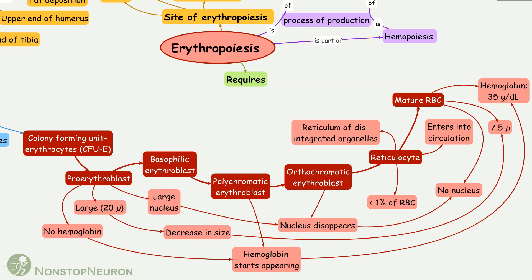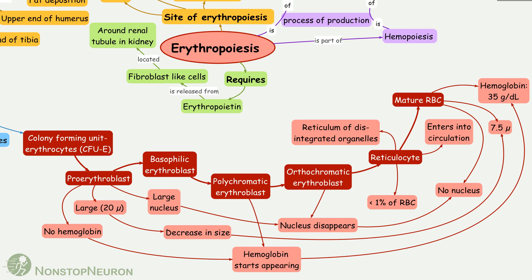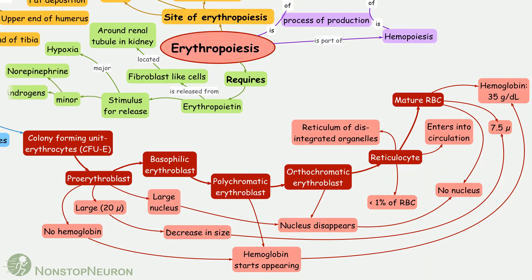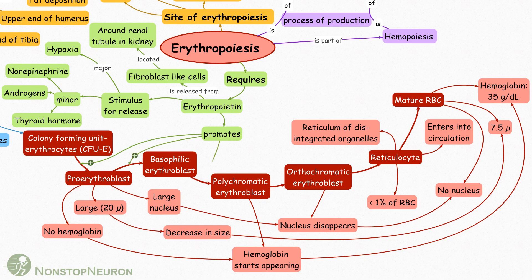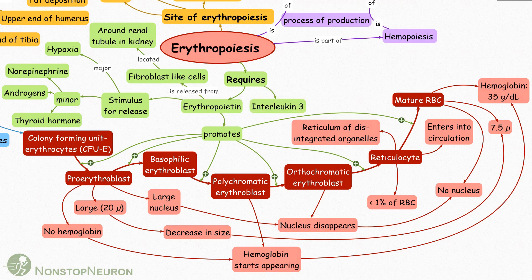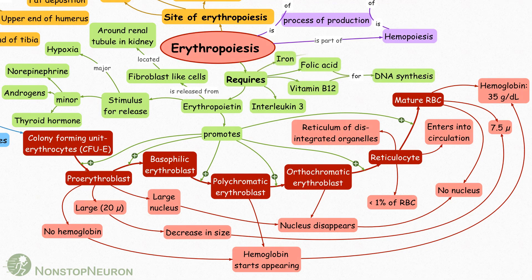Now let's see the things required for erythropoiesis. First, erythropoietin. It is secreted from fibroblast-like cells located around the renal tubule in the kidney. The stimulus for erythropoietin release is mainly hypoxia. Other minor stimuli are norepinephrine, androgens, thyroid hormones, etc. It promotes production of proerythroblast from stem cells and also speeds up the growth of cells through different stages, so under the influence of erythropoietin more RBCs are produced. Other factors include interleukin-3, folic acid and vitamin B12 for DNA synthesis, and iron for hemoglobin.